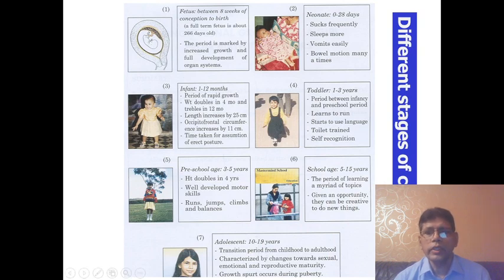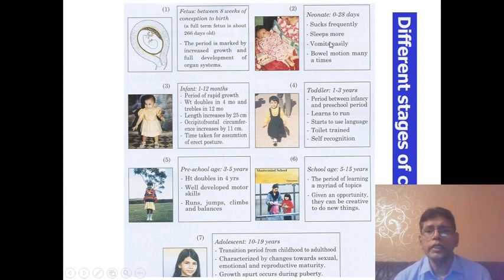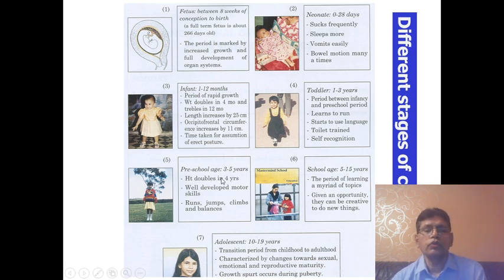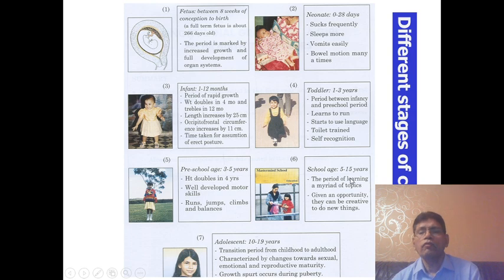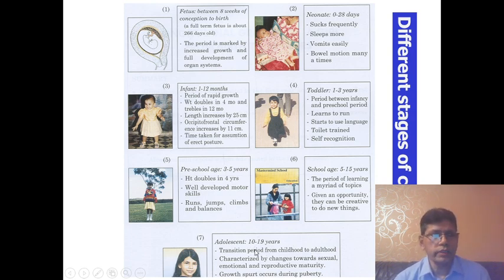The different stages of childhood: Fetus — before birth. Neonatal period — after 28 days of life. Infant — first year of life. Toddler — one to three years. Preschool — three to five years. School age — five to 15 years. Adolescent — 10 to 19 years, according to the World Health Organization.